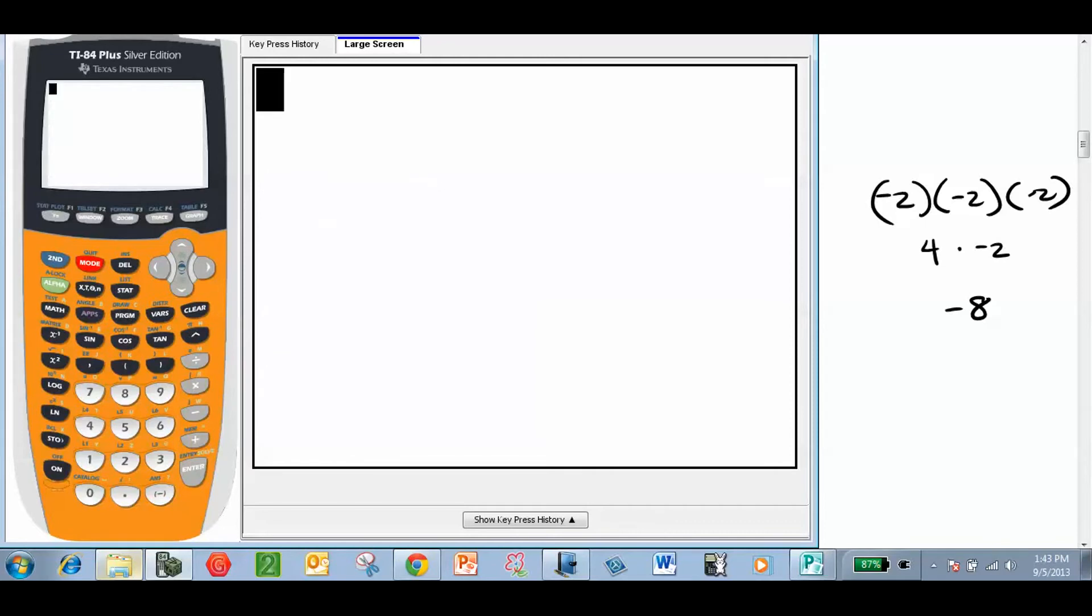Let's go home and we plug in negative 2 squared on the TI-84. It gives you negative 4, which of course is false.